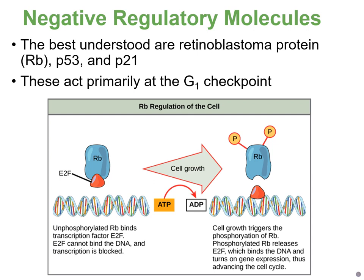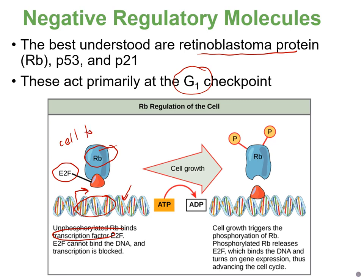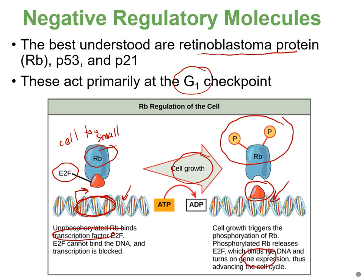Retinoblastoma protein (RB) inhibits cell division near the G1 checkpoint by monitoring cell size. When the cell is not large enough, RB binds to E2F — a transcription factor that enables gene expression by allowing DNA to be read and proteins to be made. When RB is bound to E2F, gene transcription is blocked. When the cell gets big enough, RB becomes phosphorylated, releases E2F, and gene expression allows the cell cycle to continue.